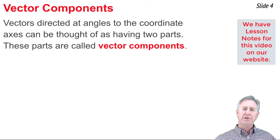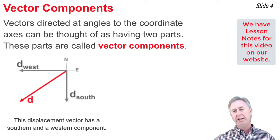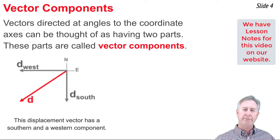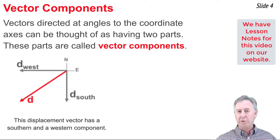Vectors directed at angles to the traditional x-y axes are thought of as consisting of parts, and we refer to these parts as vector components. For instance, here we see a vector directed into the third quadrant. It's a southwest displacement vector. And being directed southwest, it has two components. It has a southern component, and it has a western component.